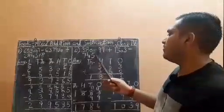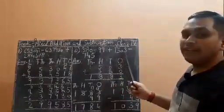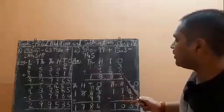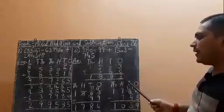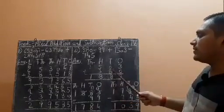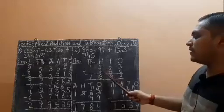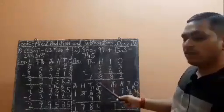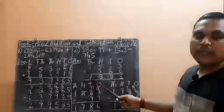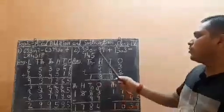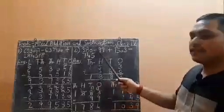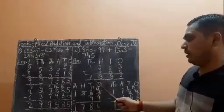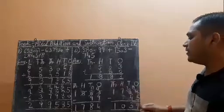So 1503 plus 380: 3 plus 0 is 3, 0 plus 8 is 8, 5 plus 3 is 8, and 1 is brought down as 1. Now you also have to subtract 99. So the addition answer is 1883. From that we will subtract 99.